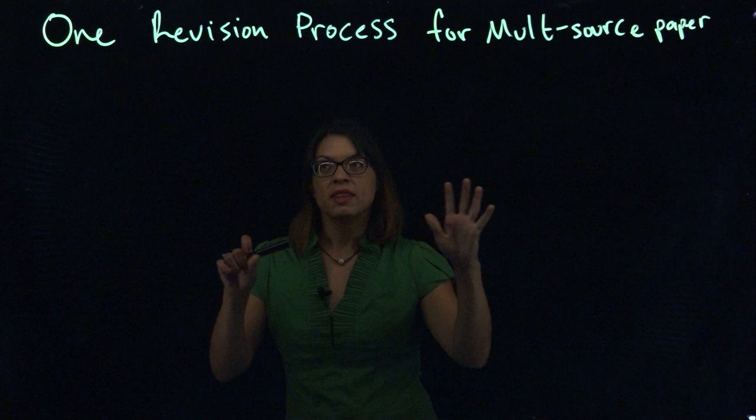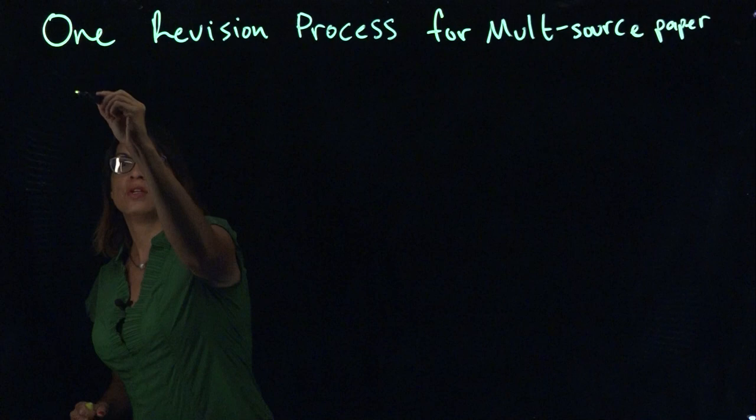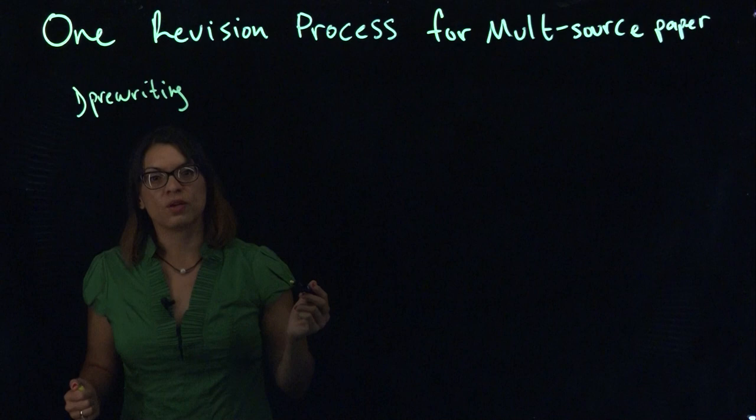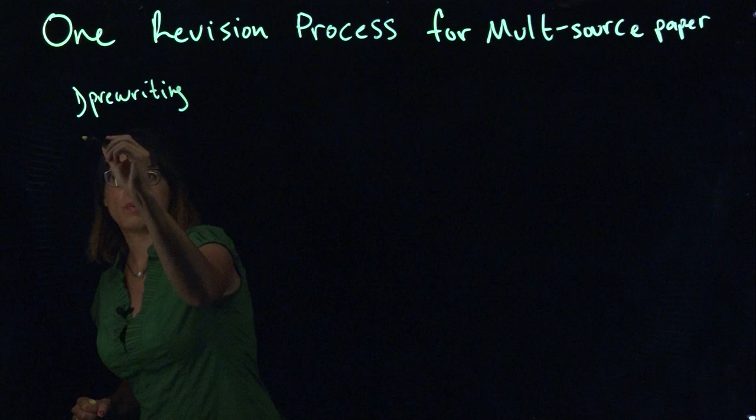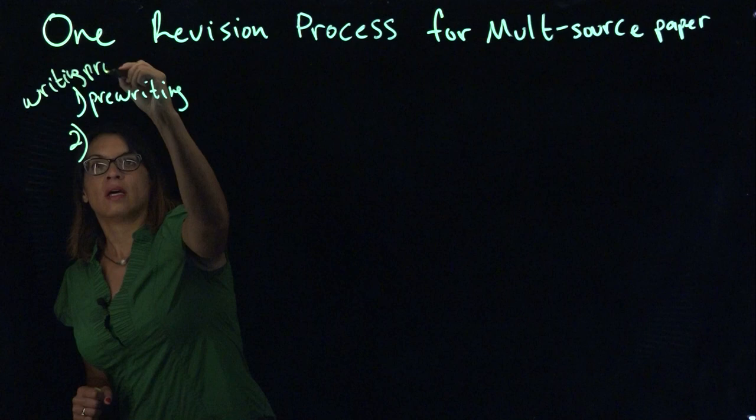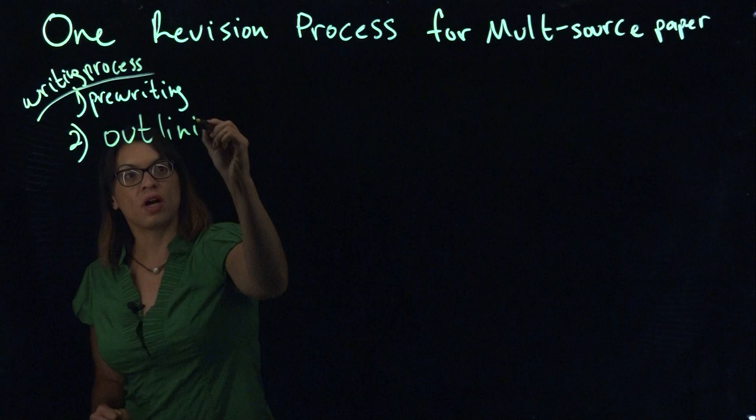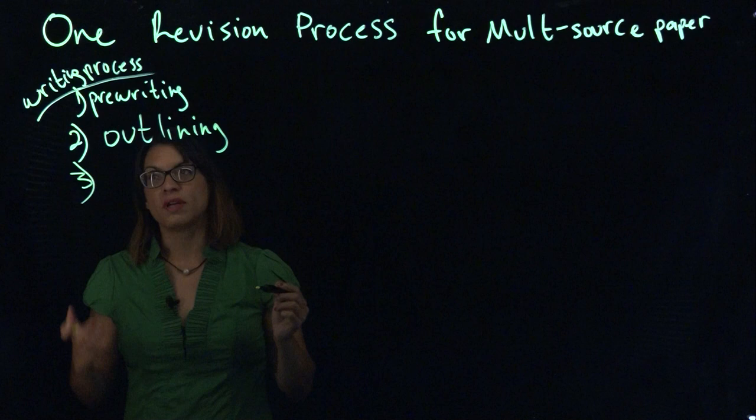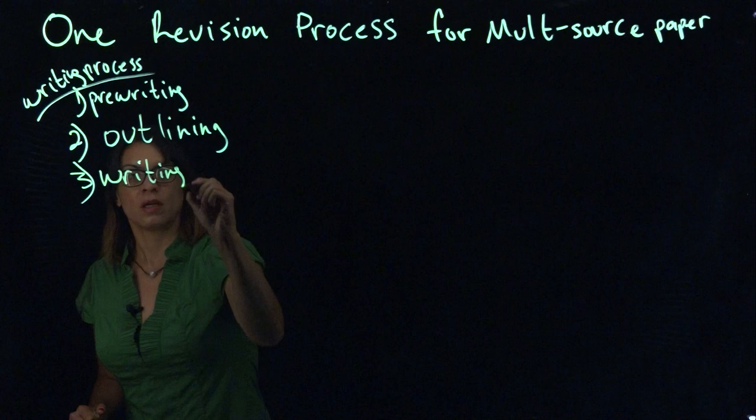The revision process is step four of having an overall writing process. If you were engaged in a pre-writing process where you were considering your rhetorical situation, brainstorming, and thinking about your audience, that would be step one. Step two would be outlining, thinking about the structure of your paper before you start writing. And then step three would be writing a rough draft.